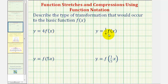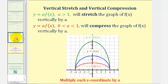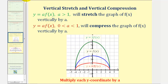To better understand what's happening here, let's take a look at some notes and some graphs. Let's first consider y equals a times f of x, where y equals f of x would be the graph of this middle function here in blue. Let's first consider what happens when a is greater than one — let's say a equals two. Notice if we graph y equals two times f of x, the graph is vertically stretched.